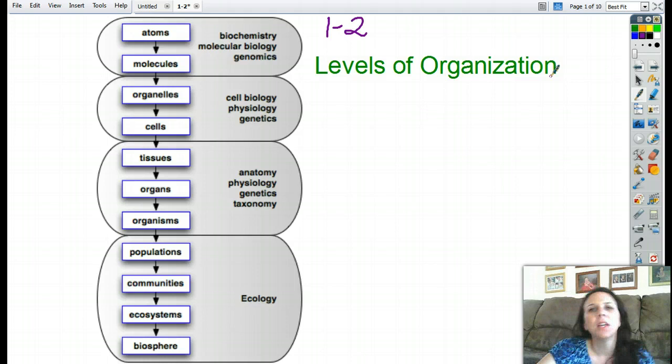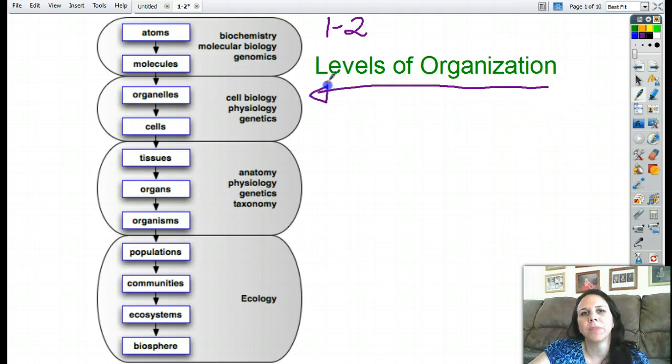So we spent the last time just talking about what does it mean to be alive. And so today what we're going to do is take a look at levels of organization of things that are alive. Now in biology, we can study pretty much anywhere from here to here, but we're going to focus it on a couple of different levels.